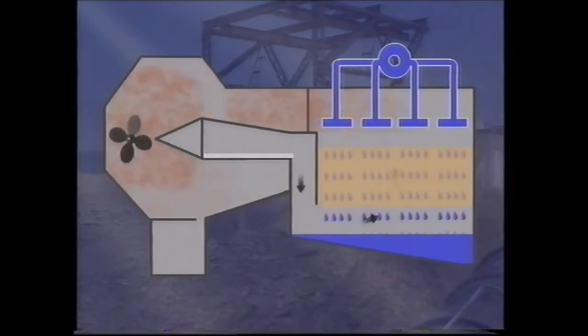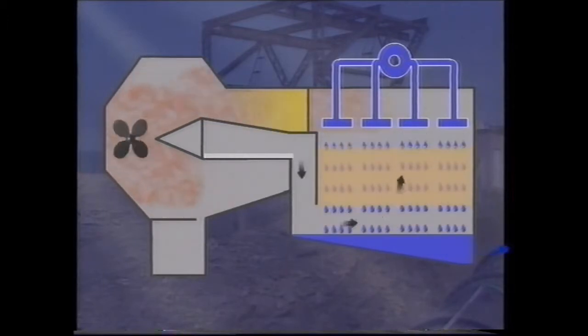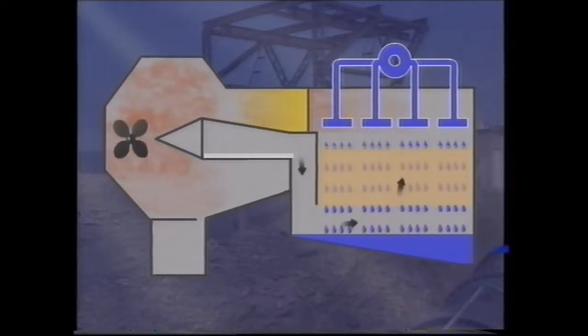On meeting the air stream most of the bromine is stripped from the seawater. The water is returned to the sea and the wet bromine laden air passes from the top of the tower to be treated with sulphur dioxide and water.